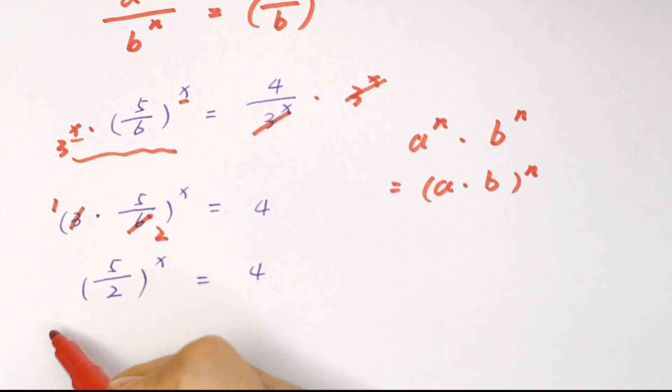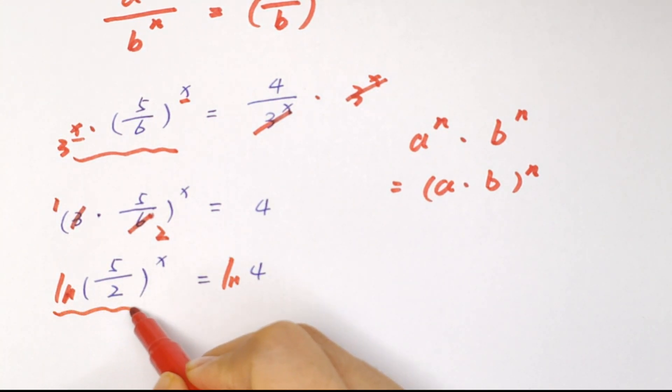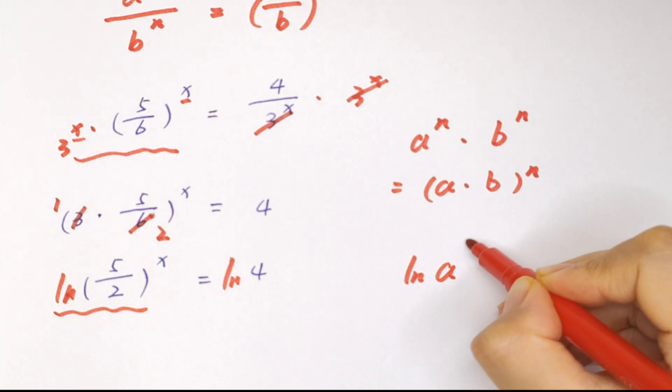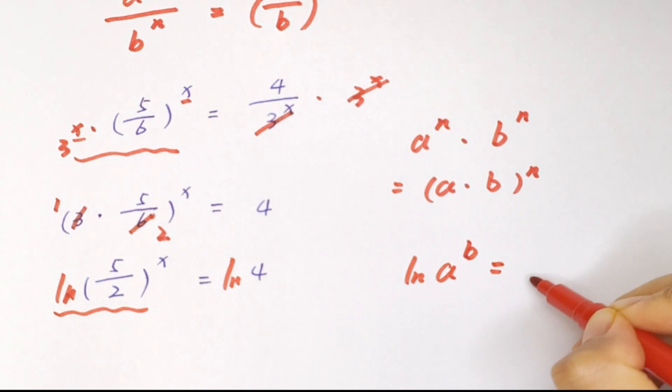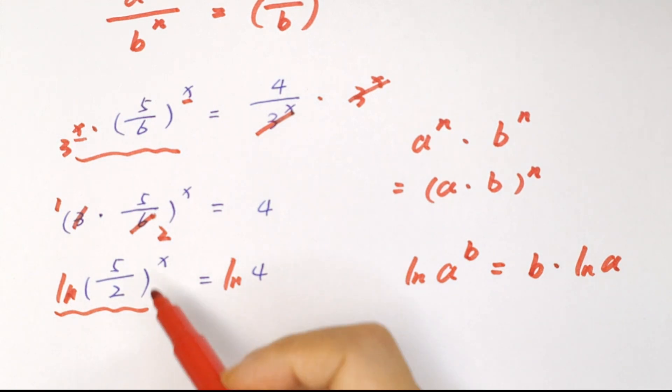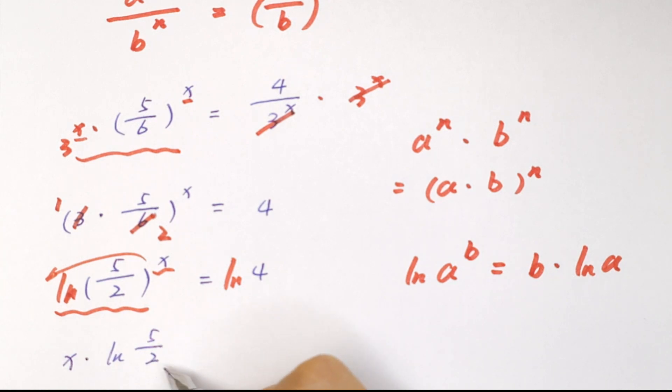Now we apply log rule in both sides. In this part, log a to the power of b equals b times log a. So we change the position, x times log 5 over 2 equals log 4.